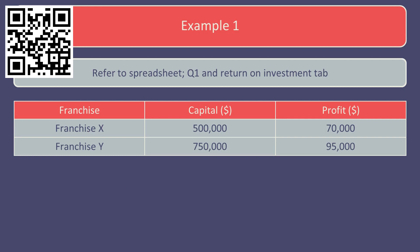Each franchise manager is currently considering the following separate investments. The budgeted capital requirement for franchise X is £500,000, which is expected to yield a profit of £70,000. Franchise Y requires a capital investment of £750,000, from which a profit of £95,000 will be generated.